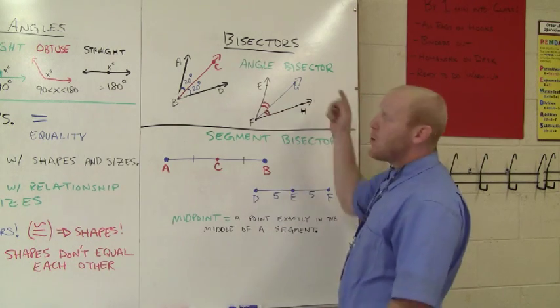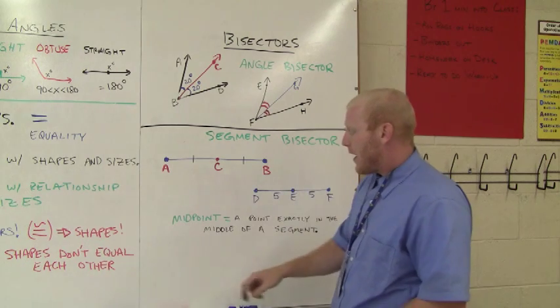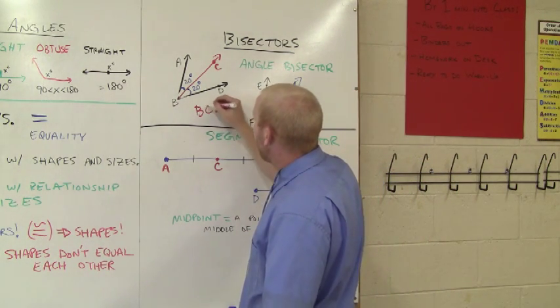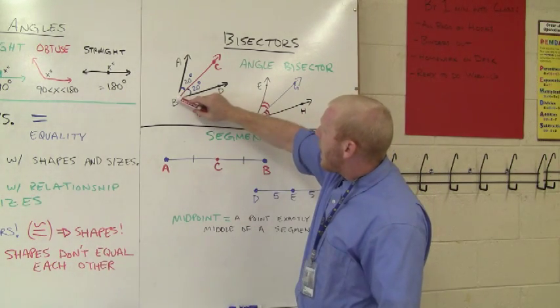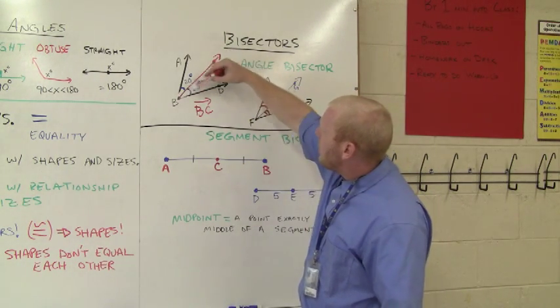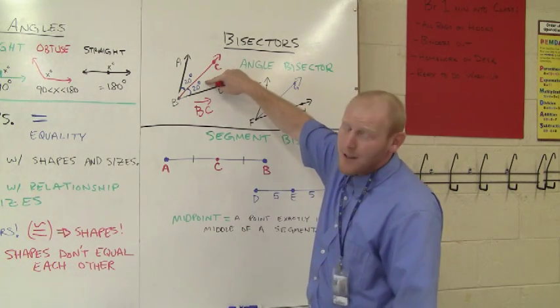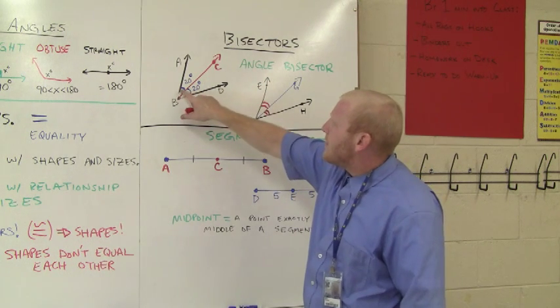So here I have two examples of an angle bisector. What they are, in this example, ray BC would be the angle bisector. As you see here, ray BC cuts this angle directly in half. And we show this by, we can have 20 degrees and 20 degrees here. They're the same amount. That's how we know they're congruent.